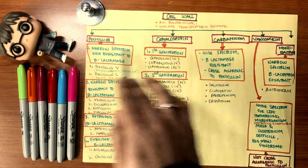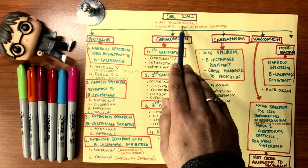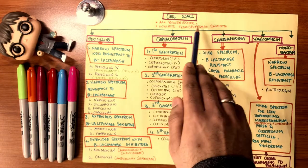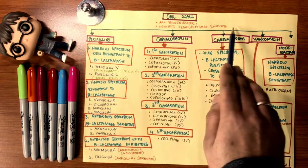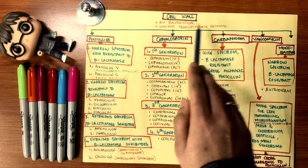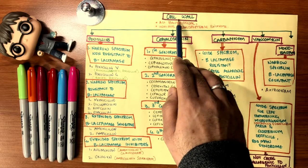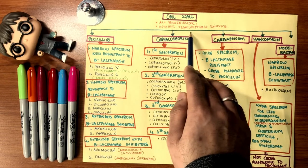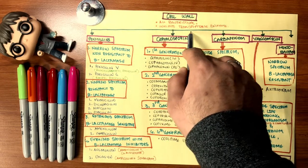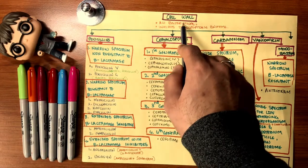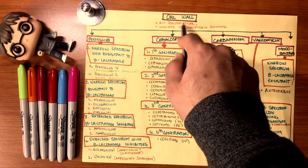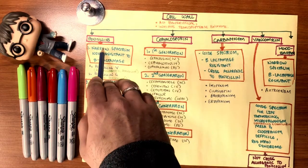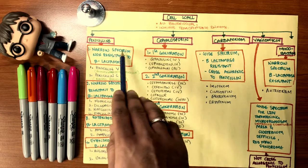The cell wall synthesis inhibition done by these drugs are all bacteriocidal. They inhibit the transpeptidase enzyme. This enzyme is required to formulate the cell wall of the bacteria. These drugs inhibit this enzyme, causing a hole or a pore into the cell wall of the bacteria and causing the internal structures to leak out.